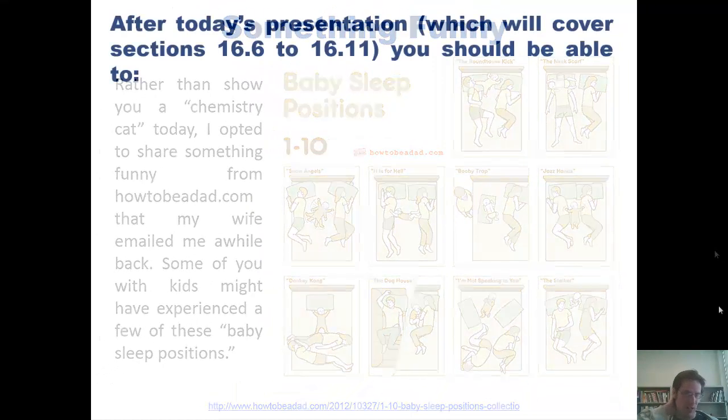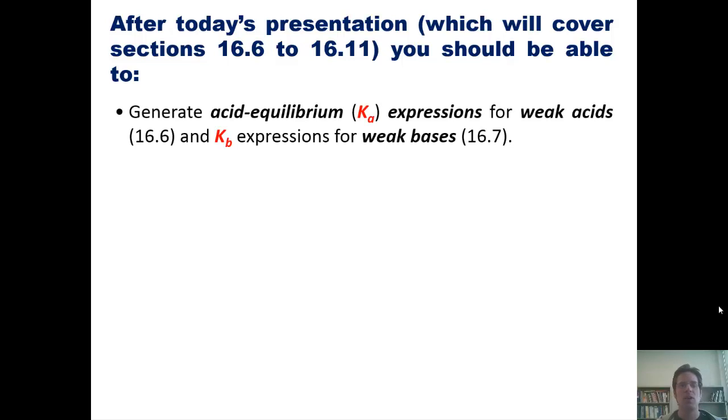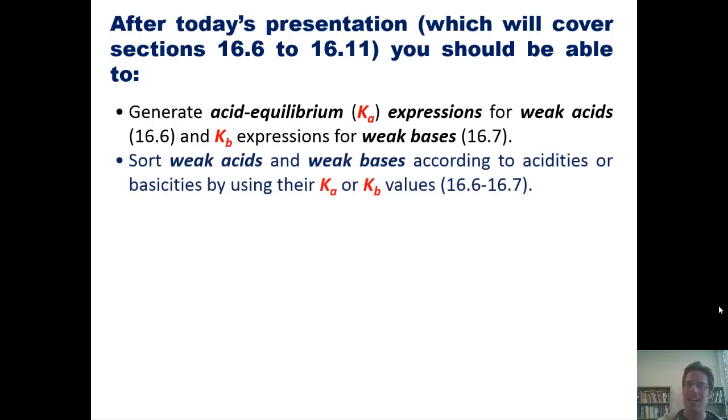Now, after the next and final sets of lectures on Chapter 16, you guys should be able to do the following. First, generate acid-base equilibrium or Ka expressions for weak acids and Kb expressions for weak bases. Second, sort weak acids and weak bases according to their acidities or basicities by using their Ka or Kb values. Third, use the Ka values of weak acids to determine a solution's pH.